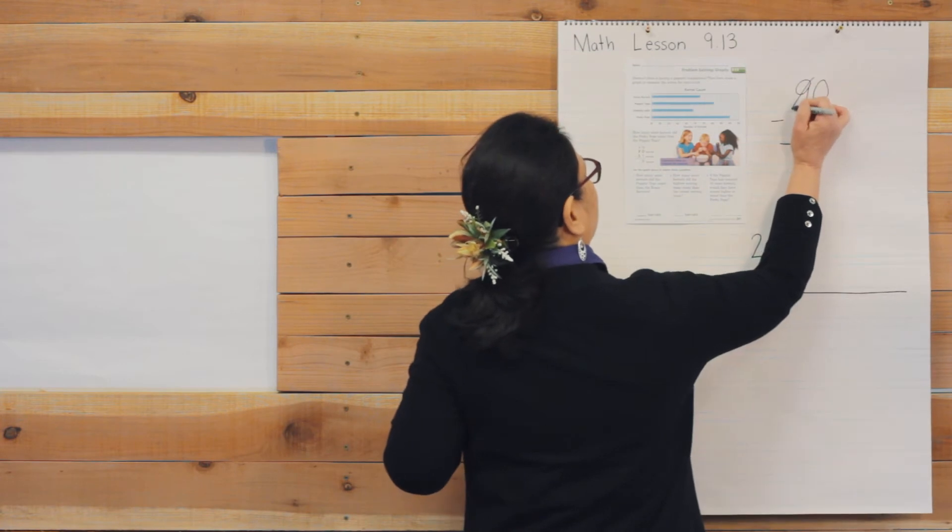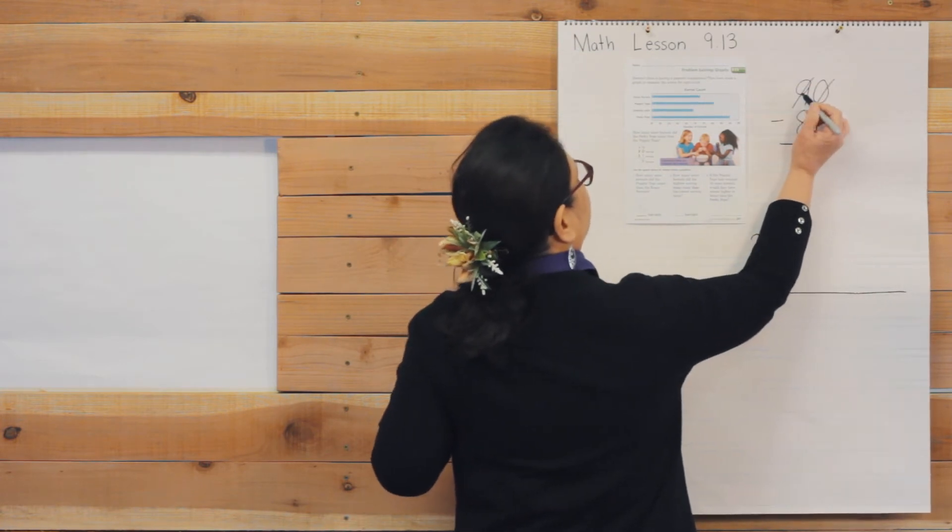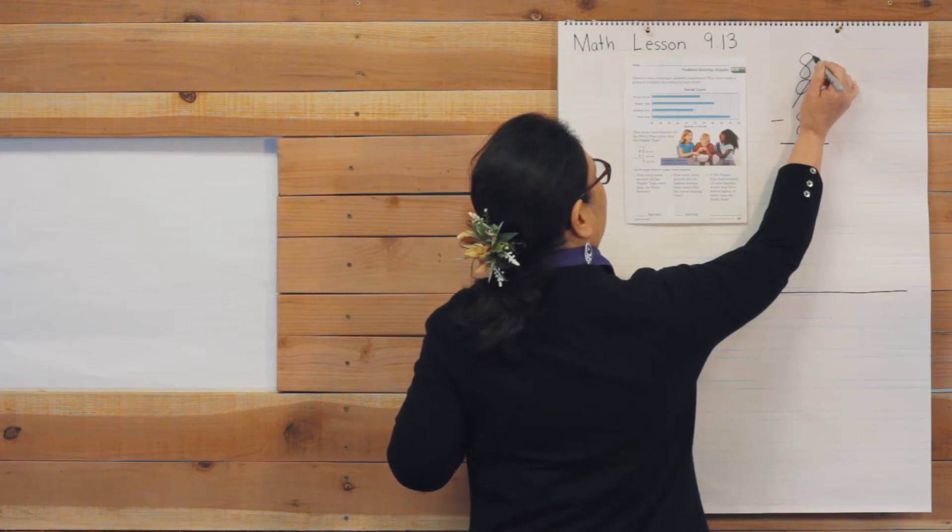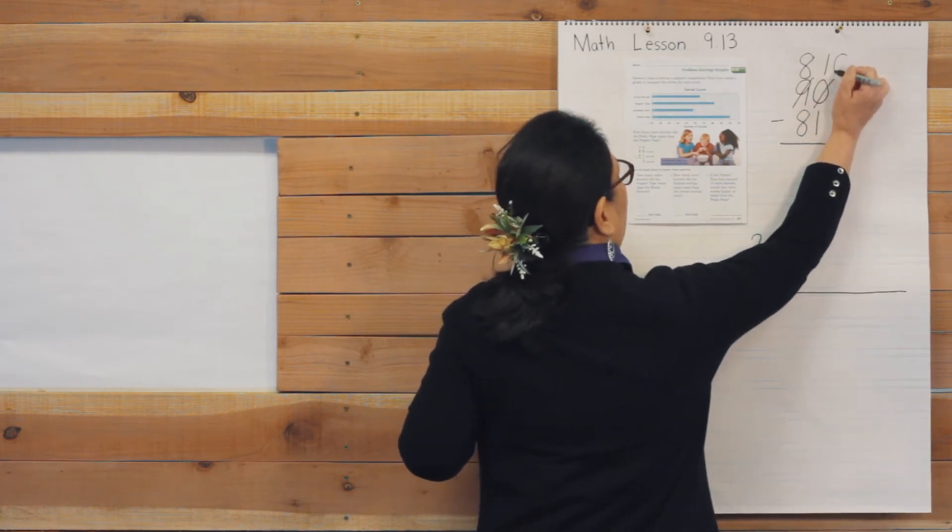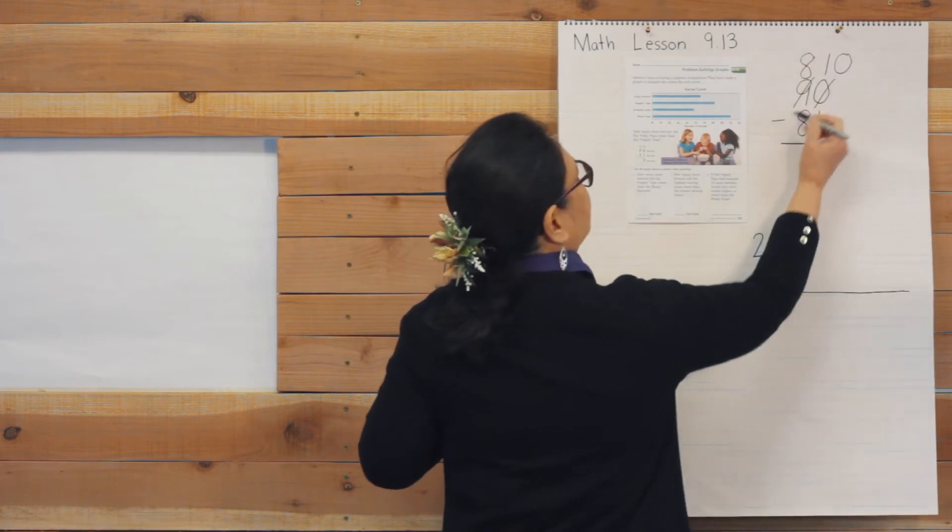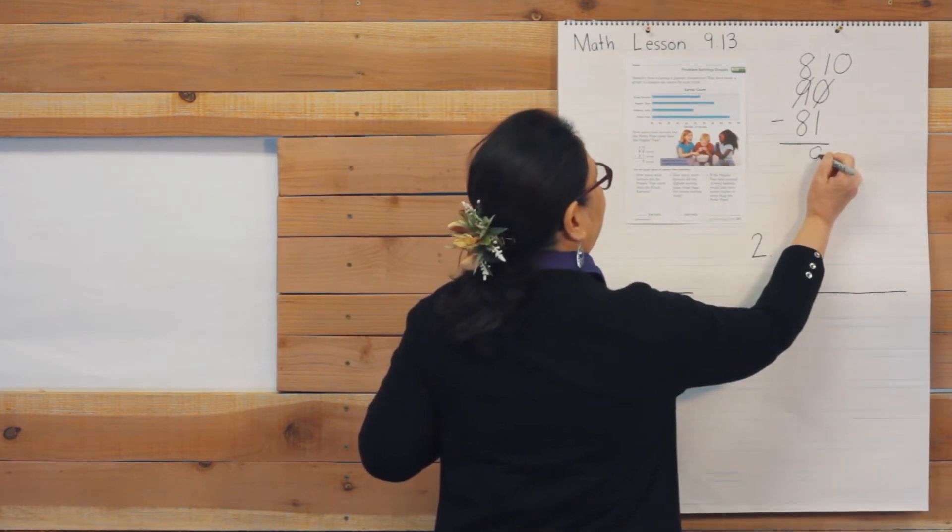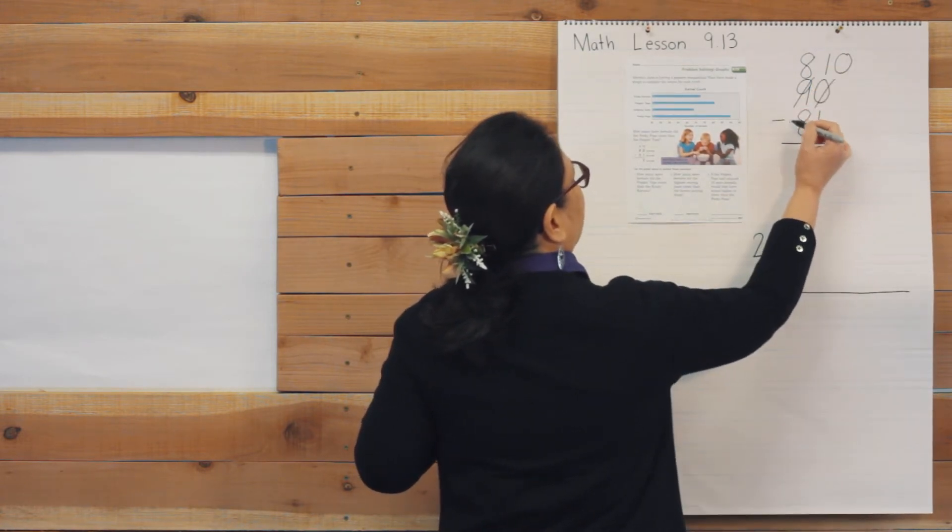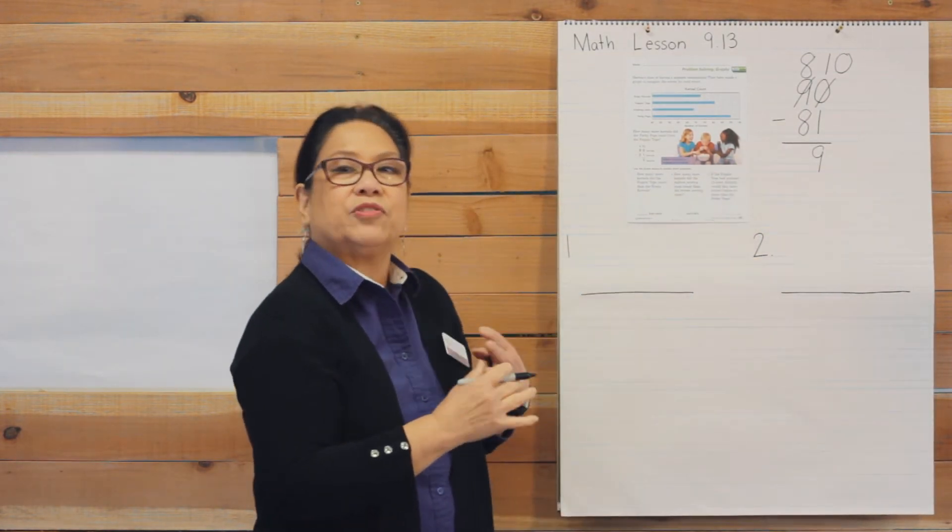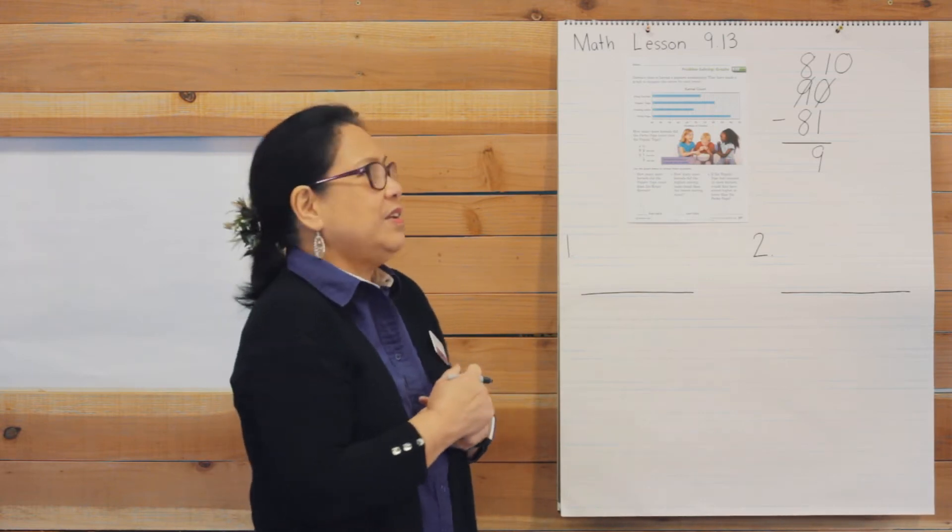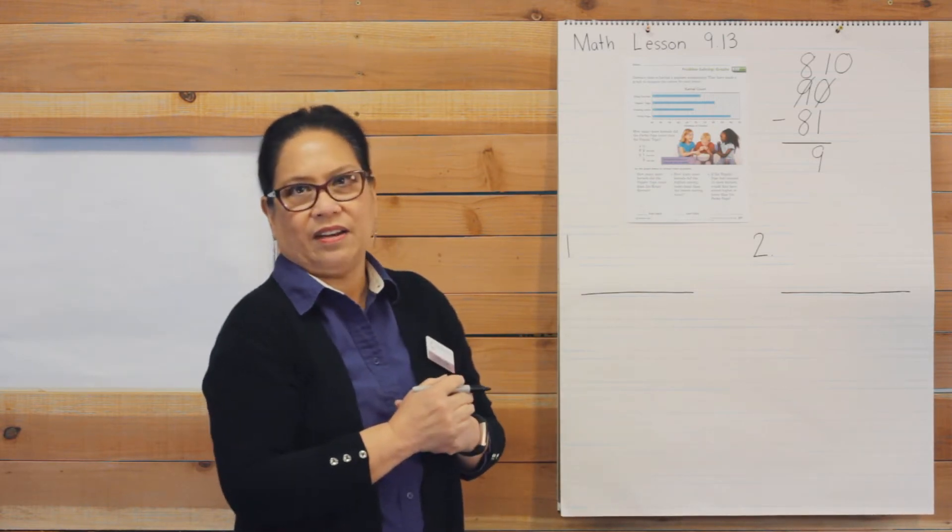So let us regroup. We'll take a 10 out of the 9. That makes it 80. We'll put the 10 on the other side and add the 0. 10 take away 1 is 9. And 8 take away 8 is 0. And we never put the 0 in the tens place because your number never starts with the 0. So the answer is 9 more.